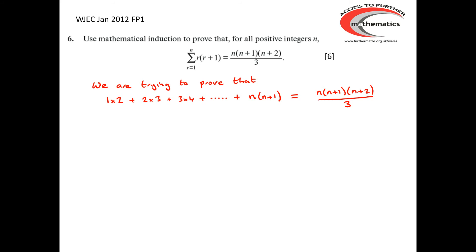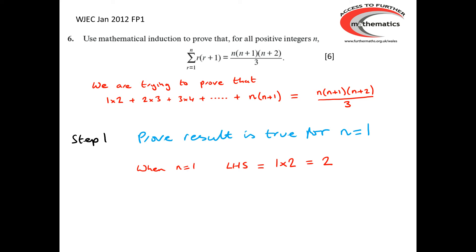For a proof by induction, we must start by showing the result is true for n=1. When n=1, the left-hand side is simply 1×2, which equals 2. The right-hand side is 1×(1+1)×(1+2) over 3, which is 1×2×3 over 3, also equal to 2. So the left-hand side equals the right-hand side when n=1, and the result is true for n=1.